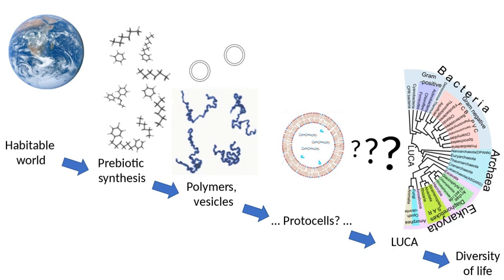Isotopes are any of two or more forms of a chemical element having the same number of protons in the nucleus, or the same atomic number, but having different numbers of neutrons in the nucleus, or different atomic weights. By 2.4 billion years ago, the ratio of stable isotopes of carbon, iron, and sulfur shows the action of living things on inorganic minerals and sediments, and molecular biomarkers indicate photosynthesis, demonstrating that life on Earth was widespread by this time.